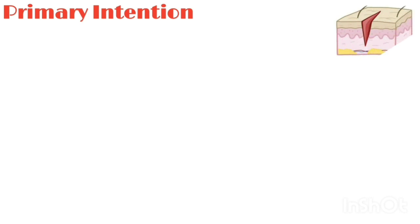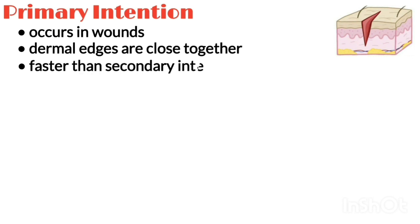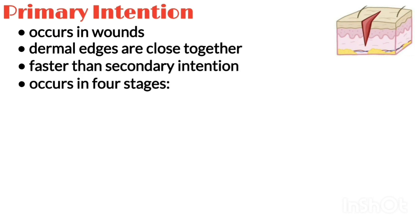Let us now discuss primary intention. Healing by primary intention occurs in wounds with dermal edges that are close together, for example a scalpel incision. It is usually faster than by secondary intention and occurs in four stages.